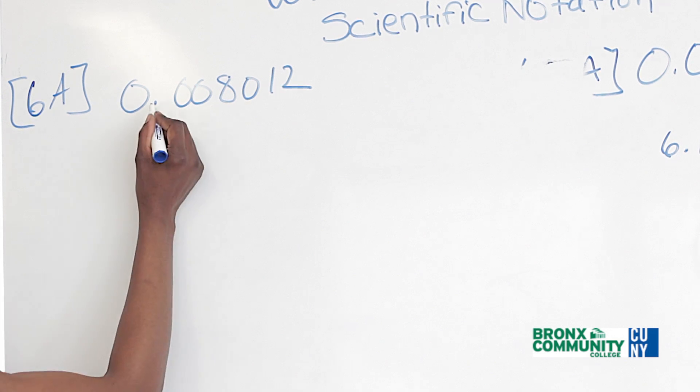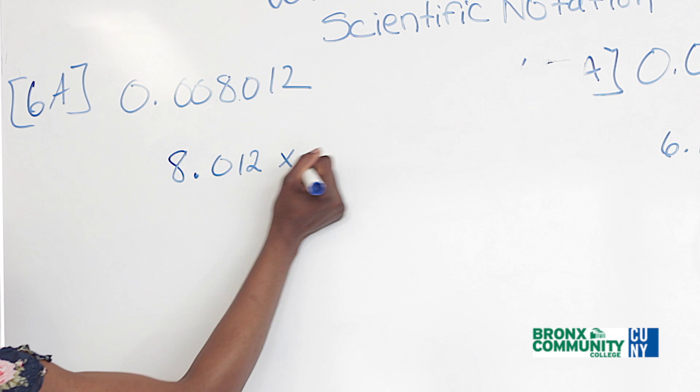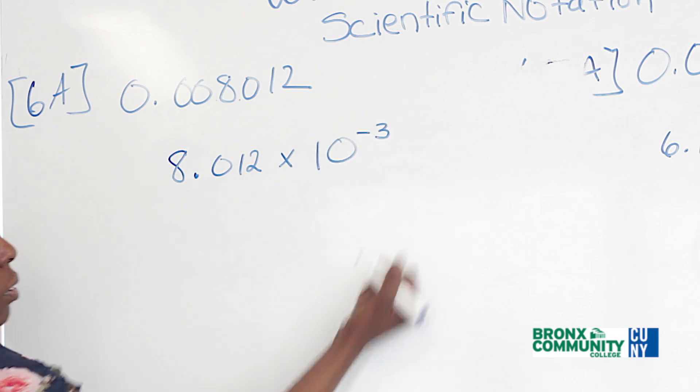So since we have to move this 1, 2, 3, 3 places, we write it as 8.012 times 10 to the minus 3.